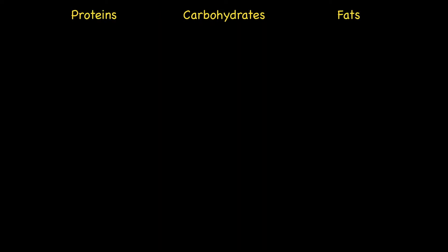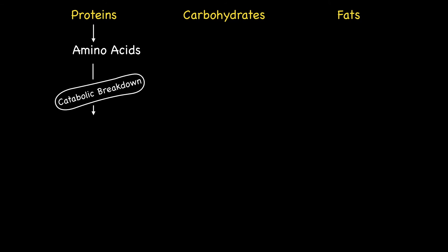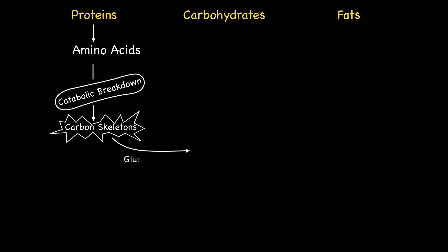Before we begin, let's have a quick recap on how Acetyl-CoA is produced from the catabolic breakdown of proteins, carbohydrates, and fats. Proteins are digested within the GI tract to give amino acids. These amino acids are subsequently transported to the liver, where they undergo further catabolic breakdown, leading to the extraction of their carbon skeleton. The glucogenic amino acids, such as alanine, give pyruvate, which in turn is decarboxylated to give Acetyl-CoA.